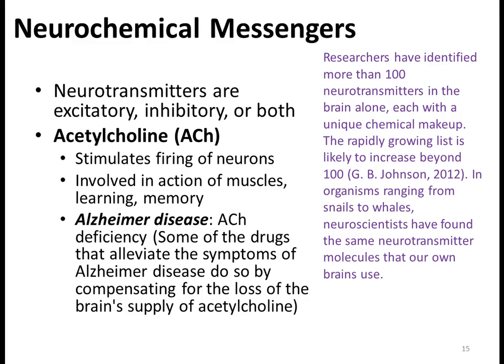Let's look at some of the main neurotransmitters and what they're used for — why our brain naturally produces different chemical messengers. Acetylcholine is the first: it stimulates the firing of neurons involved in muscle action, learning, and memory. Alzheimer's disease may be related to a deficiency in acetylcholine, and new treatments are looking at how to increase this neurotransmitter in the brain.